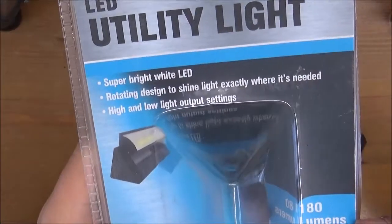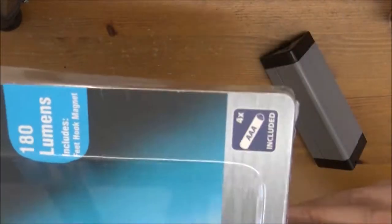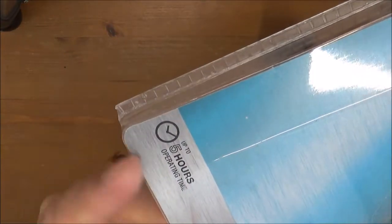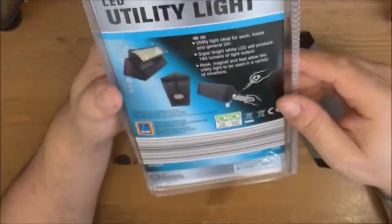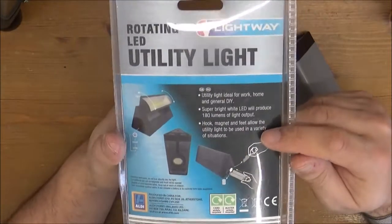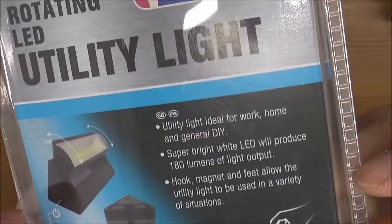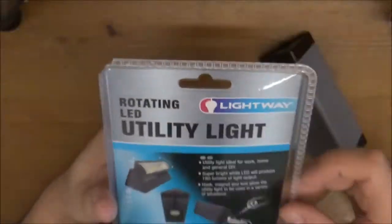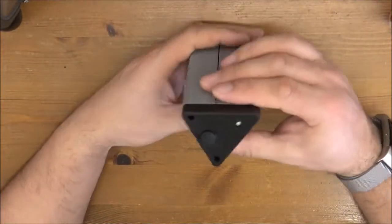The next light then - this bad boy here, again another 180 lumens they claim, and this one comes from Aldi. There's a few quirks to this one. This uses four triple A cells. It says that it runs up to five hours, probably just about get five hours out of it on its lowest setting. It has two settings.